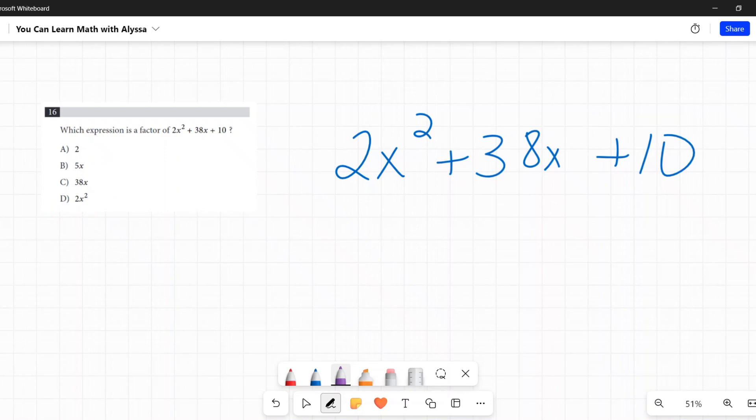What you would look for in this case is you look for a number that goes into all three or a variable that goes into all three or both. And we've already established there isn't a variable that goes into all three, but 2, 38, and 10, they are all even. So I can pull out a 2 out of all those.